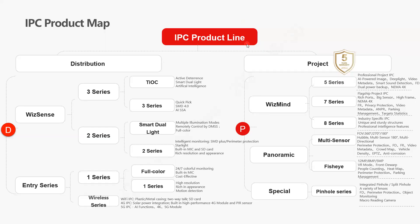Here's an example of the product lines for IPCs — the IPC product map. We have two categories: distribution end and project end. In the distribution end we have the WizMind series and the entry series, with subcategories such as the Light entry series, wireless series including solar-powered network cameras and Wi-Fi enabled IPCs.